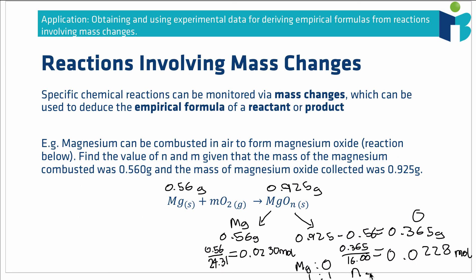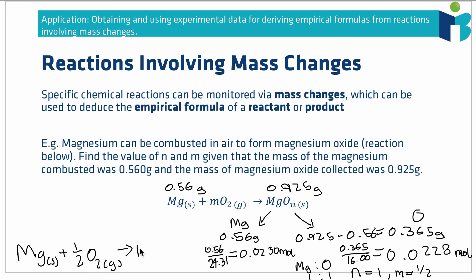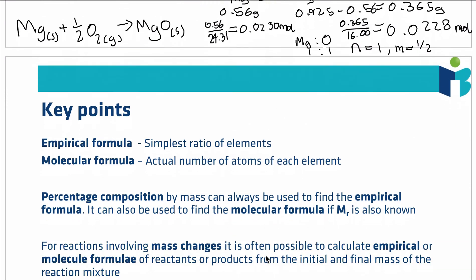As a result, n is equal to 1, and balancing the equation means m must equal ½. We therefore end up with the equation: magnesium reacts with ½ mol of oxygen to give one mole of magnesium oxide.